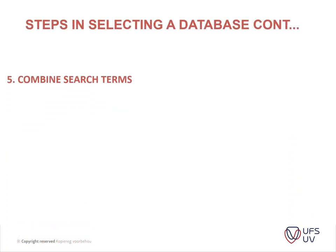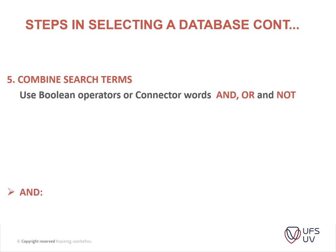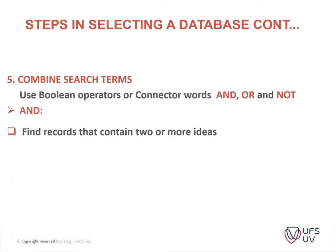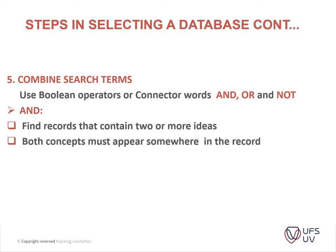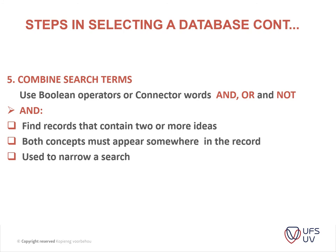Once you have identified those keywords, you don't just type them freely. You combine them using Boolean operators or connectors: AND, OR, and NOT. You use AND if you want to find records that contain two or more of the ideas you have identified. You want all those concepts to appear somewhere in the record. AND is used to narrow a search and to link different ideas.